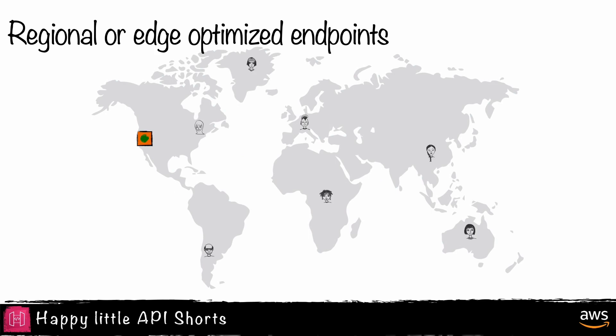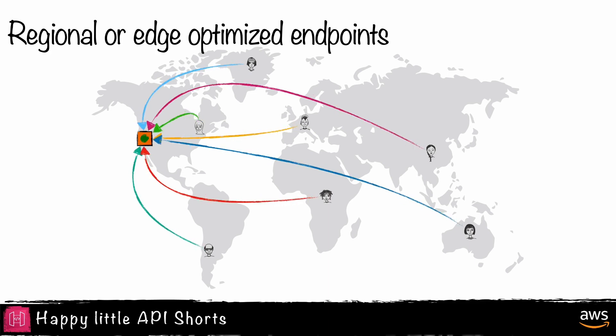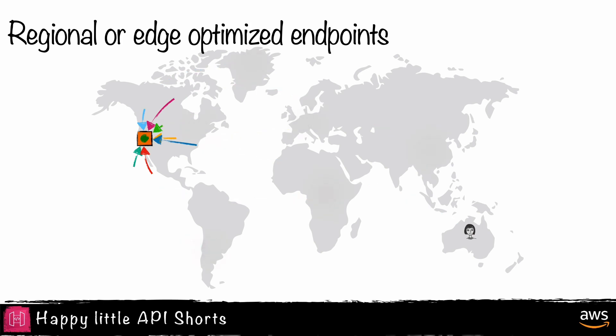This means that all requests for a specific API are routed to the region the endpoint is deployed in. This remains the same for edge-optimized endpoints. The difference between these types of endpoints is in how the request is routed.